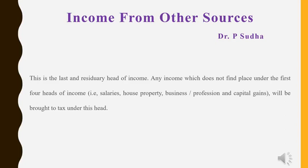Hi viewers, welcome to my YouTube channel. In this video, let us discuss the chapter Income from Other Sources. As per the Income Tax Act, there are 5 heads of income. Whatever income an assessee earns, that income should be categorized into any of the 5 heads. The 5 heads of income are income from salaries, house property, business or profession, capital gains, and other sources.